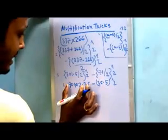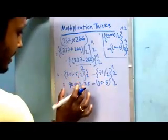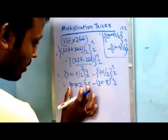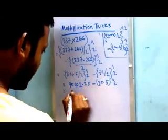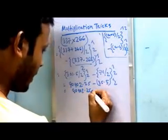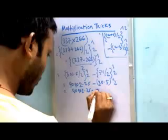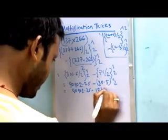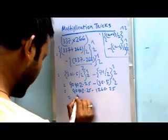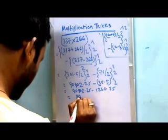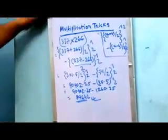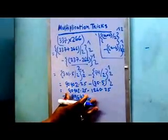This is the complete result. I have already solved this and put the value here. Now 90902.25 minus 1260.25, it will be equal to 89642. So this is the result, the obtained result.